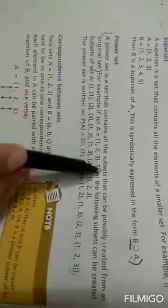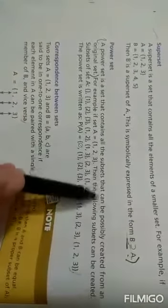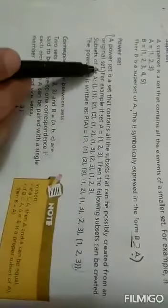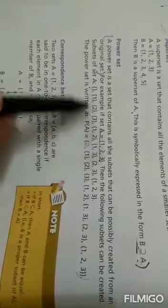Next, power set. A power set is a set that contains all the subsets that can be possibly created from an original set, which we call the power set. This is an example given. The subsets include: first write the null set, then 1, 2, 3 as separate elements. Then 1 and 2, 1 and 3, 2 and 3.